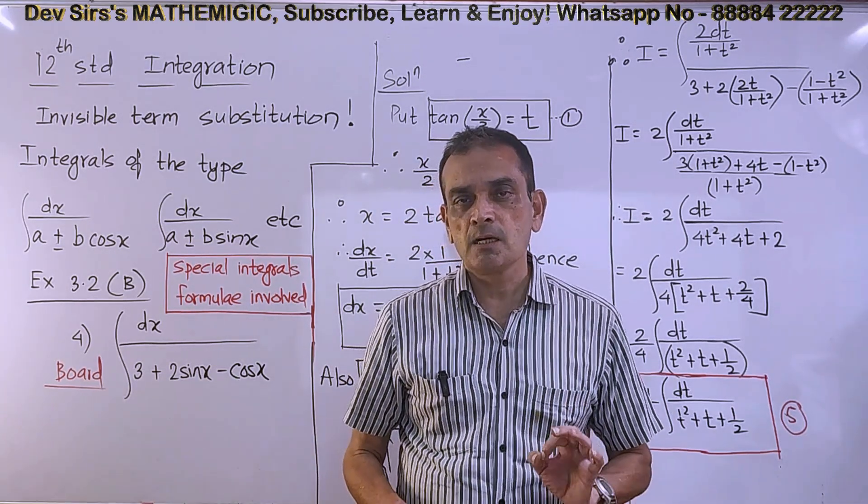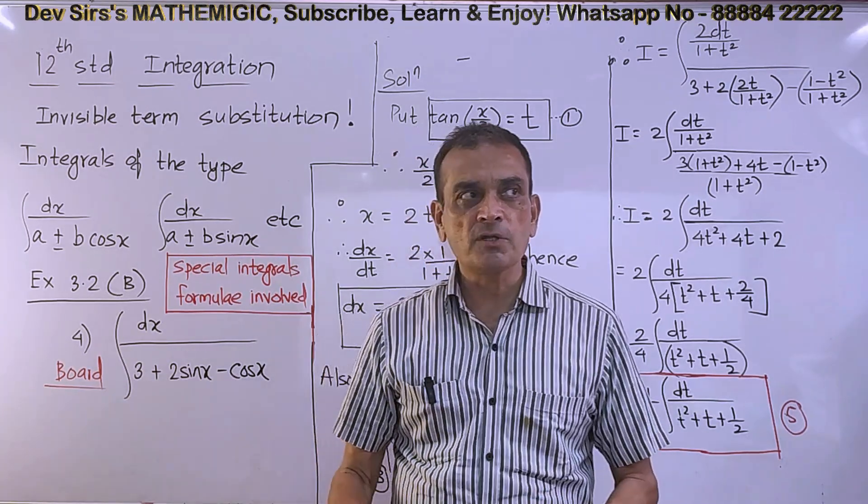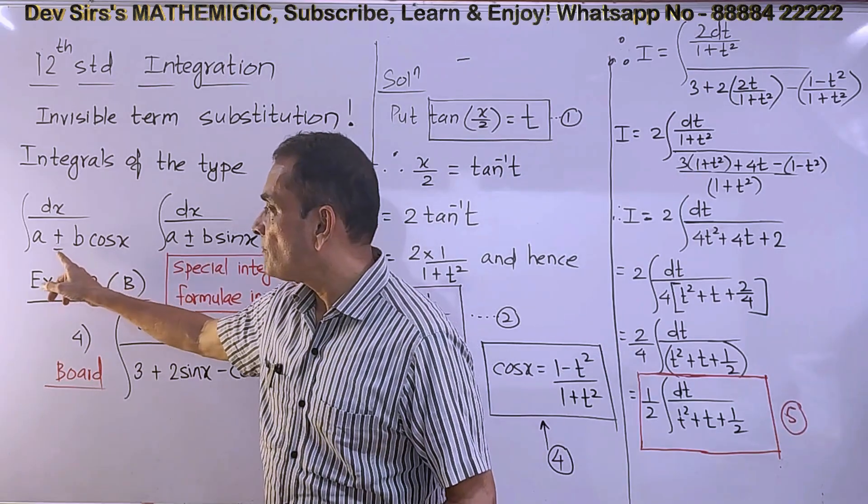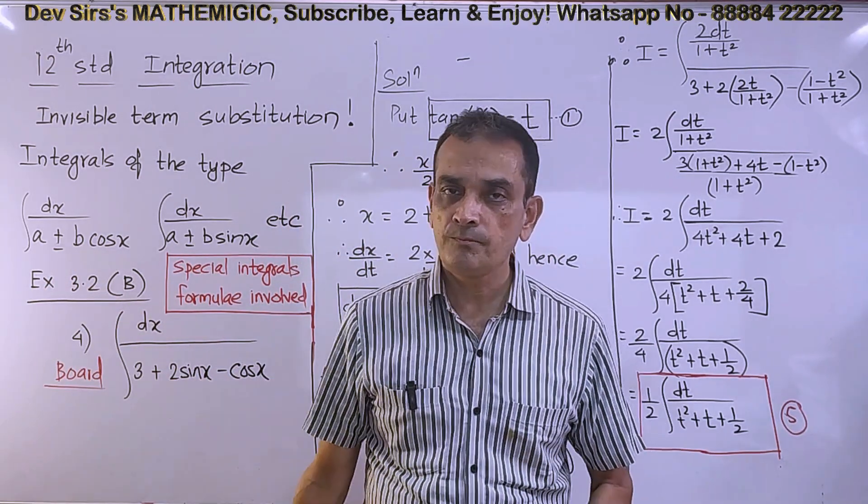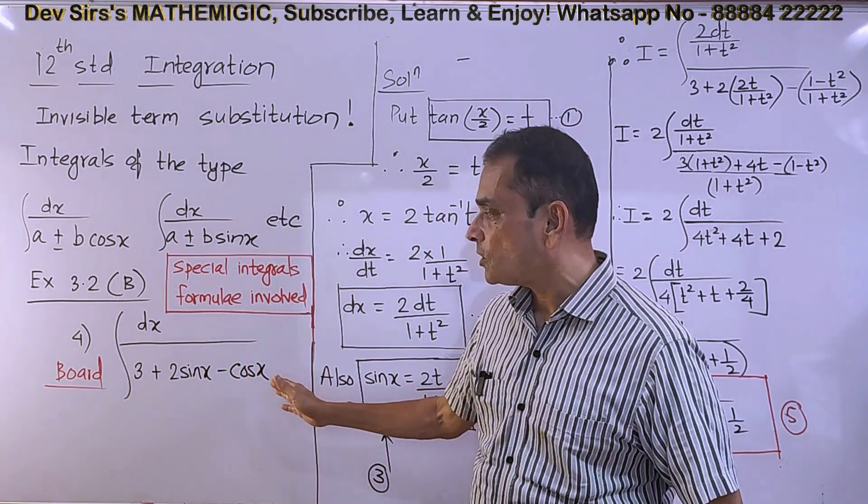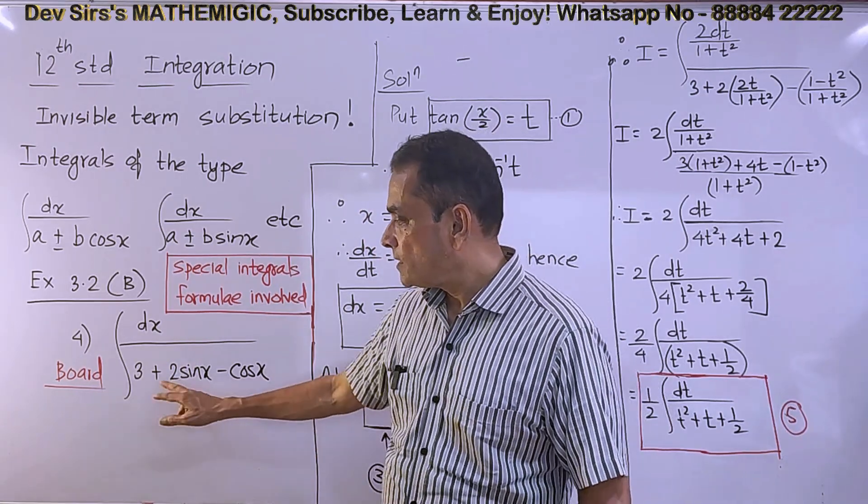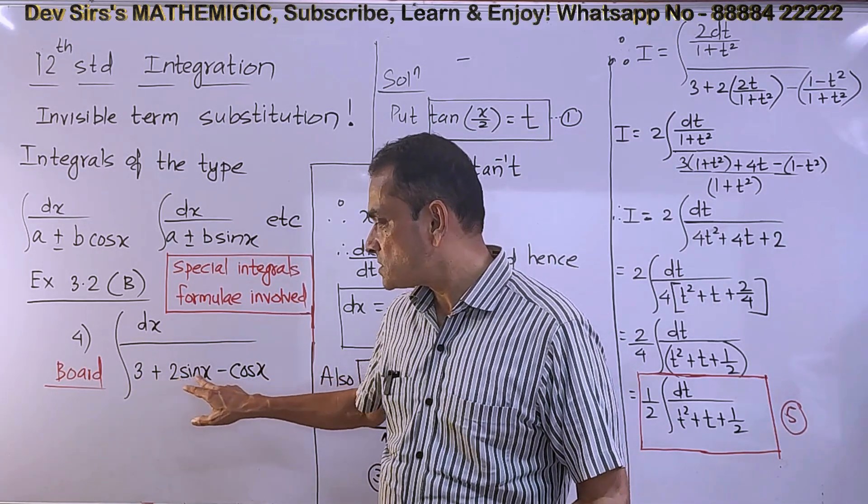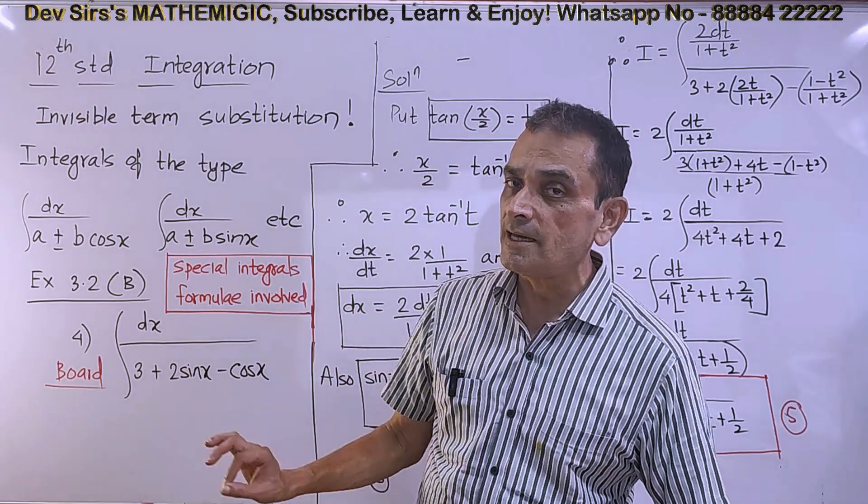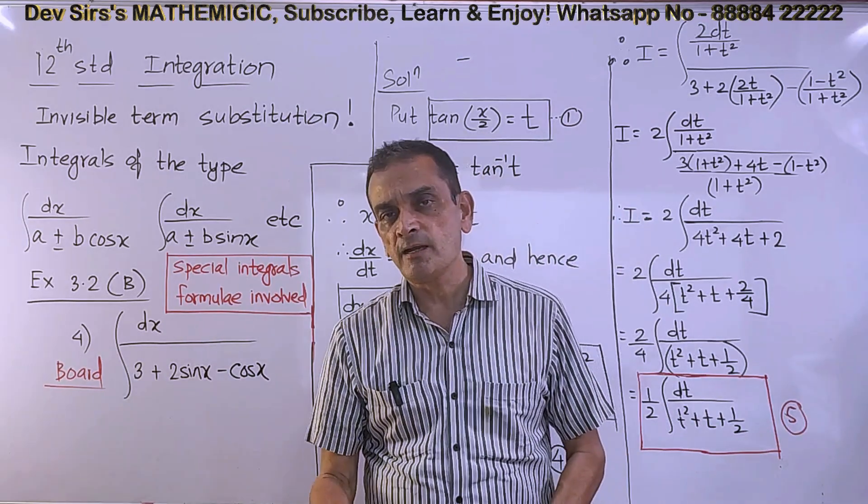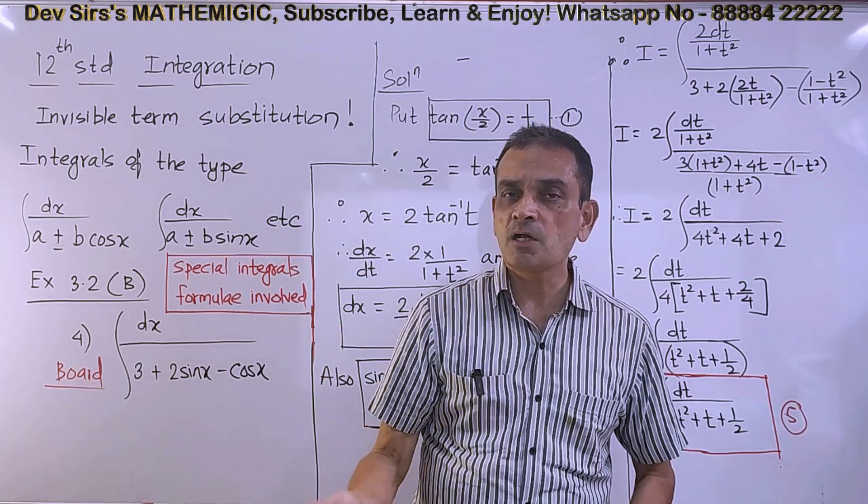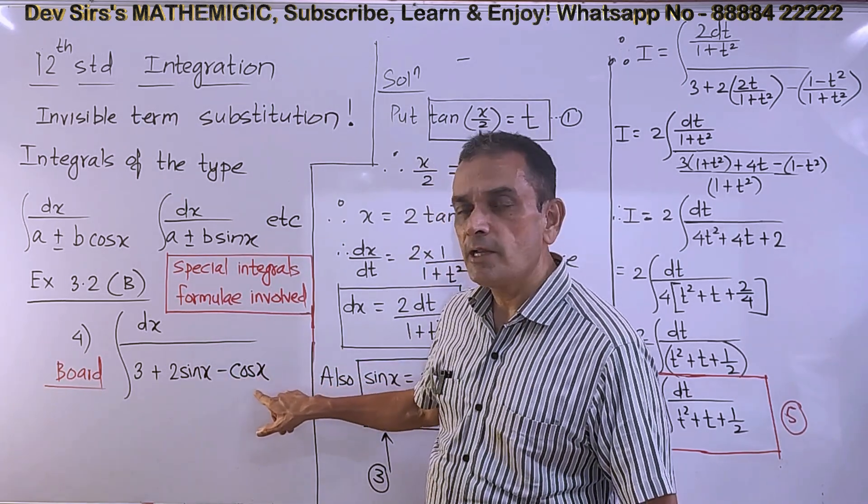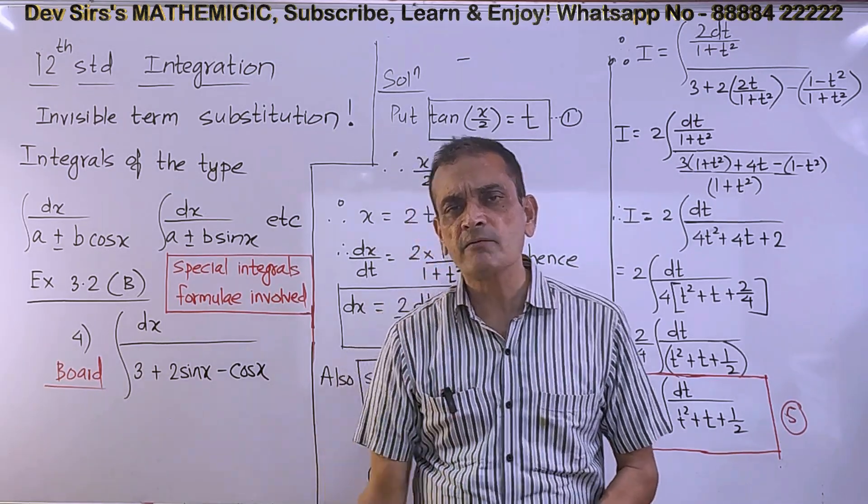First thing is how to recognize invisible term substitution integrals. Integrals of the type: dx upon a plus or minus b sin x, a plus or minus b cos x, where a and b are constants. Sometimes both sin x and cos x are present along with each other. Here 3 is a constant, 2 is a constant. Sin x and cos x are present, but sin squared x or cos squared x are not in the denominator.